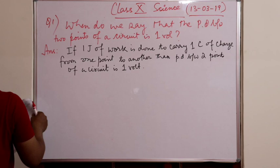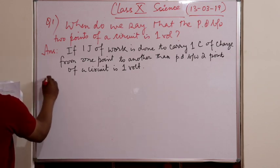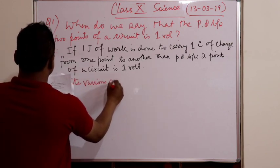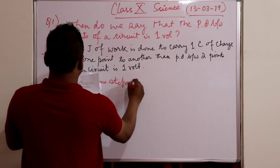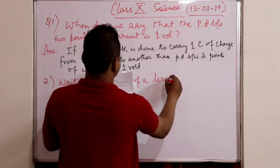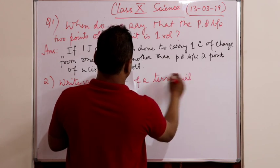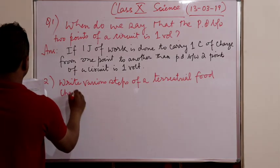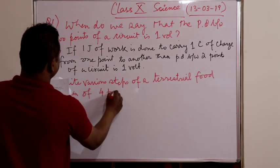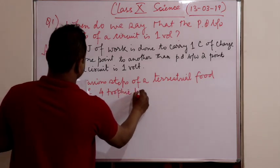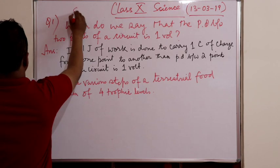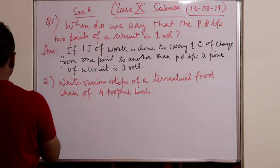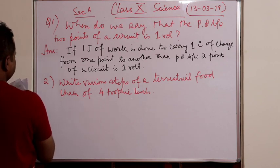Now second question. The second question is: write various steps of terrestrial food chain of four trophic levels. Very simple question. Now these are section A two questions you must have attempted.